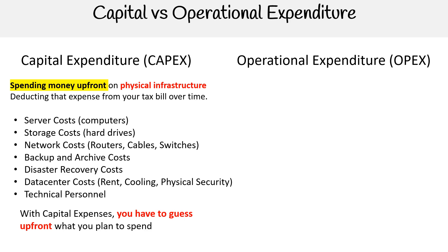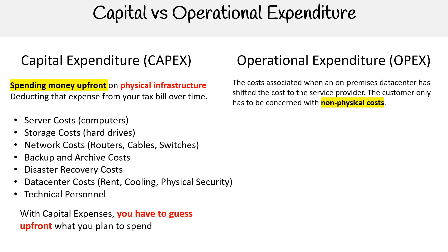Operational expenditure is the cost associated when an on-premises data center has shifted that cost to the service provider. In this case it's the cloud service provider, and the customer only has to be concerned with non-physical costs.